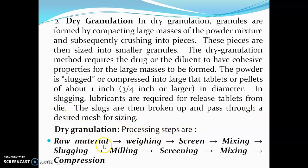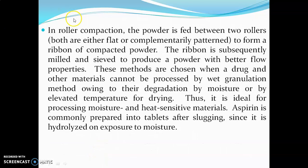Dry granulation processing steps are: raw material → weighing → screening → mixing → slugging → milling → screening again → mixing → compression. In roller compaction, the powder is fed into two rollers — either flat or complementarily patterned — to form a ribbon of compacted powder, which is subsequently milled to produce a powder with better flow properties.